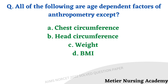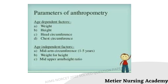All of the following are age-dependent factors of anthropometric except: options are chest circumference, head circumference, weight, and BMI (body mass index). There are two categories: age-dependent and age-independent factors. The right answer is option B, BMI. Age-dependent factors include weight, height, head circumference, and chest circumference. Age-independent factors are mid-arm circumference (up to five years), weight for height, and mid-upper arm to height ratio.